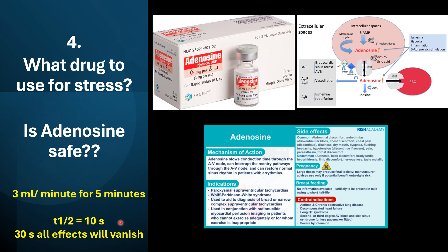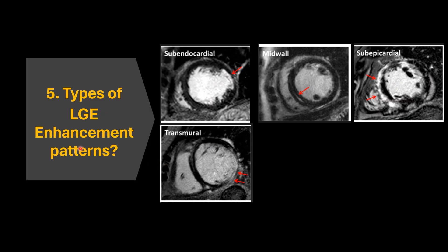Adenosine is good because its half-life is around 10 seconds, so it causes vasodilatory effects, bradycardia, and hypotension. Any adverse effect can be negated within 30 seconds to one minute. The most important contraindications are asthma, heart blocks, and long QT syndromes. In general, we give 3 ml per minute for five minutes for an average 70 kg person.